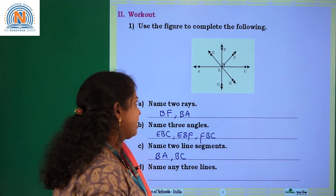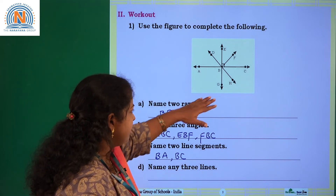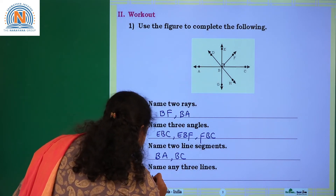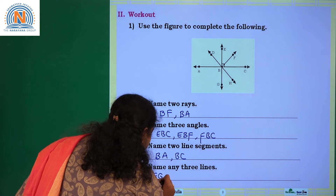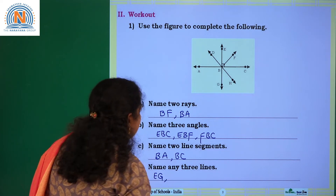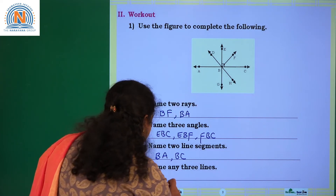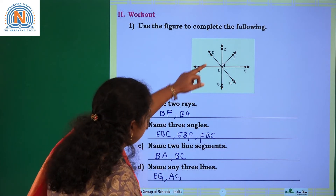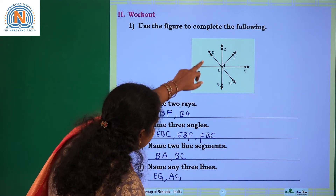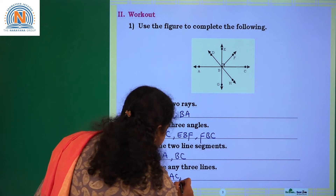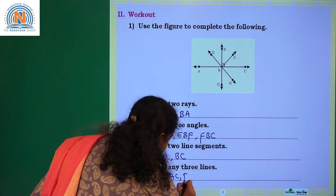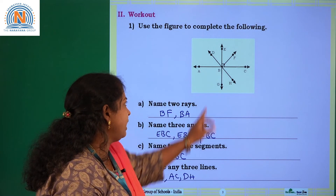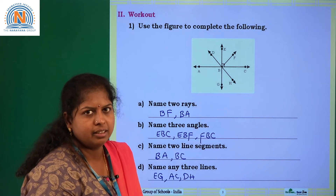Name any three lines. If you observe the figure, EG is one line, AC is another, and DH is a third line. So I have named three lines.